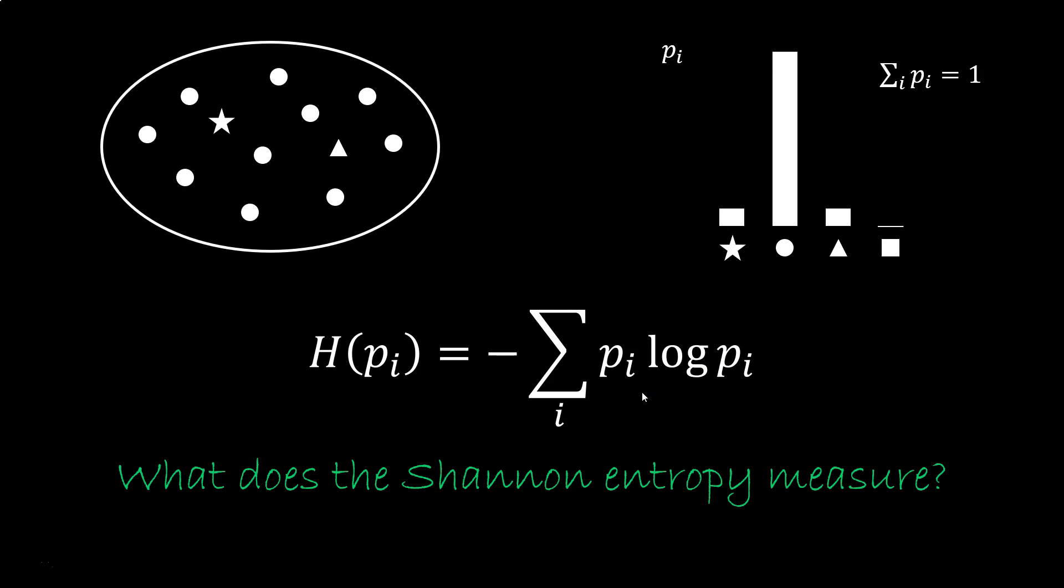Usually people use vague words like disorder, information, lack of information, uncertainty, and in some cases these words are useful, but in others they are misleading. What I want is a characterization that always works, that is intuitive, and is clear enough to be able to re-derive the mathematical expression.